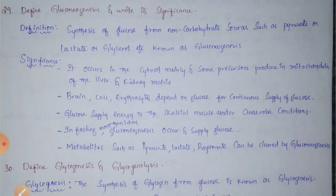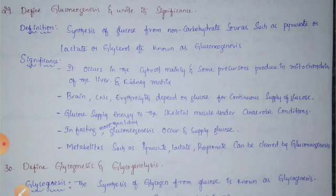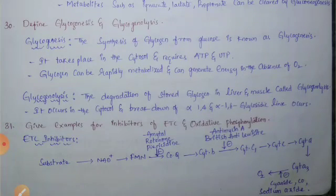Glucose from gluconeogenesis supplies energy to skeletal muscle under anaerobic conditions. In fasting for more than one day, gluconeogenesis occurs and supplies glucose by converting metabolites such as pyruvate, lactate, or glycerol into glucose. Metabolites such as pyruvate, lactate, and propionate can be cleared by gluconeogenesis.